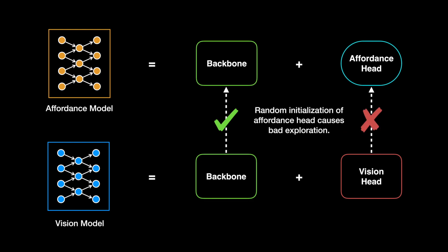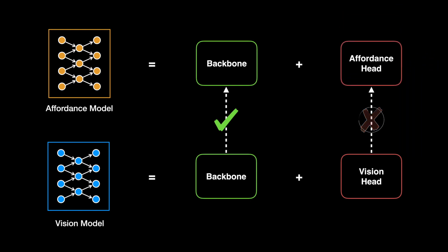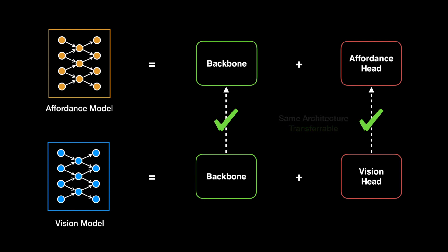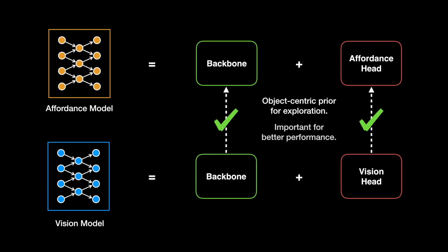However, robotics tasks require exploration. By randomly initializing the hat, the affordance model still explores randomly at the start of training, which eventually leads to no improvement in performance. We found that by designing the affordance model to share the same hat architecture with the vision model, transferring the vision head to the affordance head can lead to object-centric explorations, as vision features can localize objects.